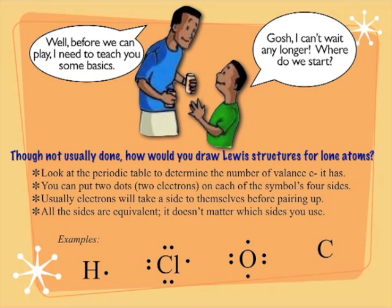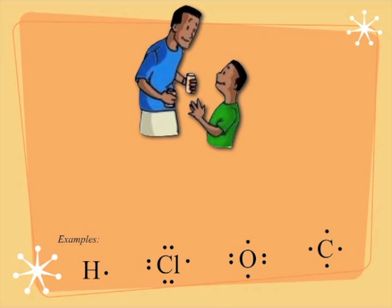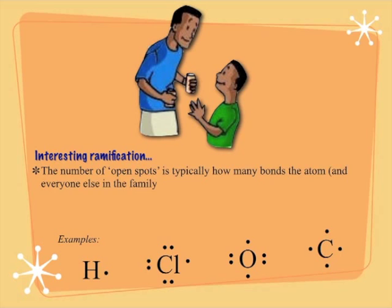Oxygen has two spots left because it's got six electrons. One, two, three, four, five, six. Wrap yourself around. And then carbon, wrap yourself around once. Four electrons. And that's why carbon is going to like to make four bonds. One of the interesting ramifications of drawing elements by themselves is you can sort of see how their families work by the number of open spots.